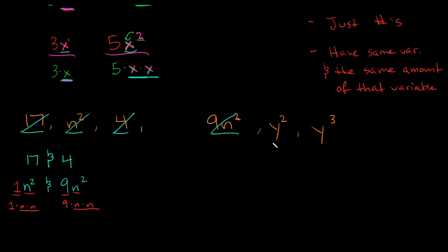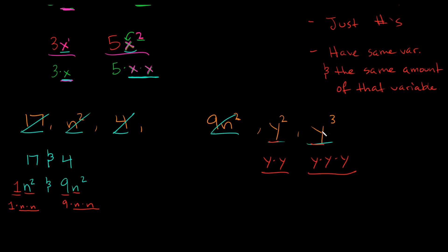Now these last two: we have y squared and y cubed. Are those like terms? Well they both have a y, but do they have the same amount of y's? Y squared is the same as y×y — that's two. Y cubed is the same as y×y×y — that's three. So no, those are not like terms. You can easily tell just by looking at the exponents: since the exponents don't match, these are not like terms.